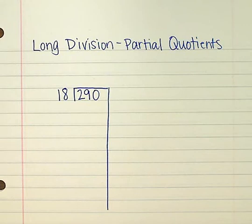So, for example, in this problem, I have 290, and I want to find out how many groups of 18 can go into 290.